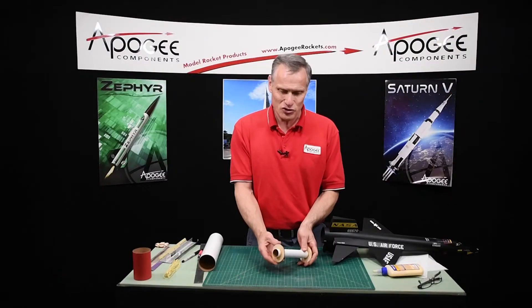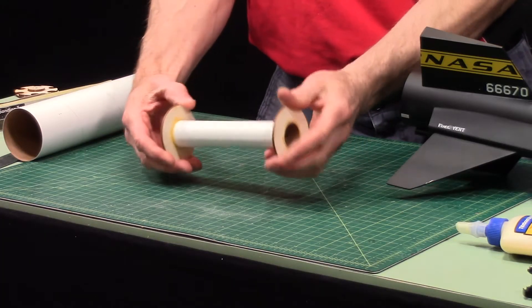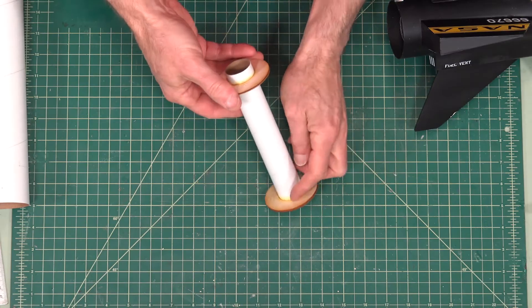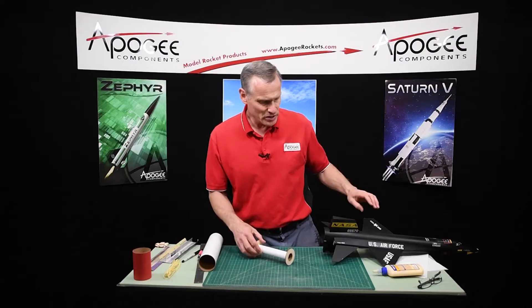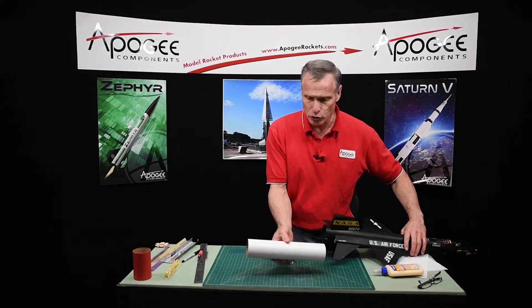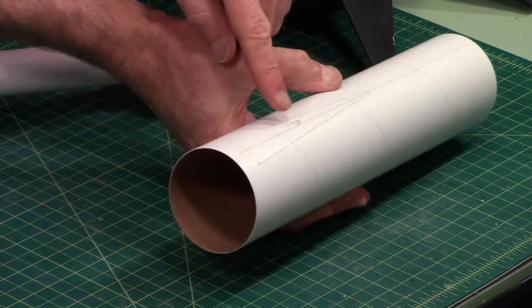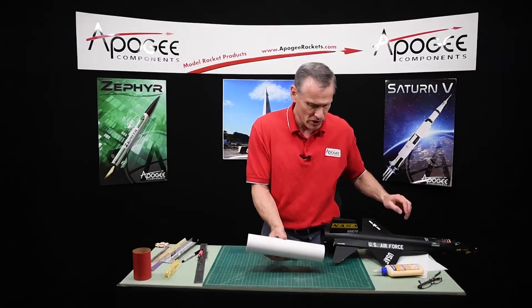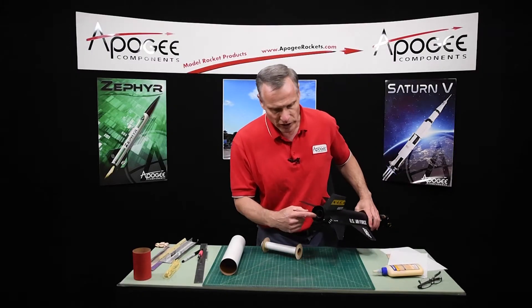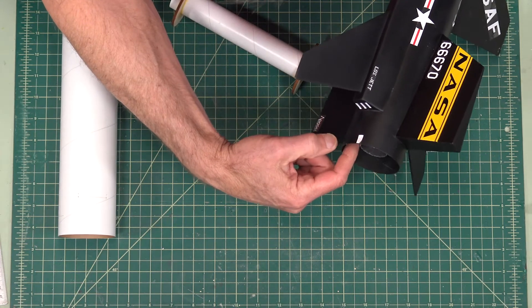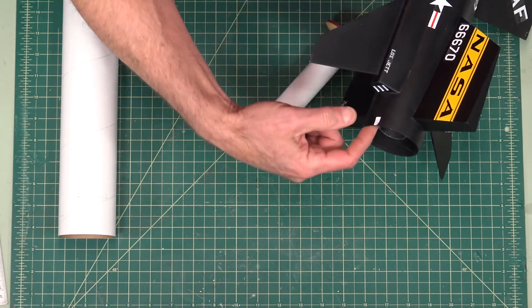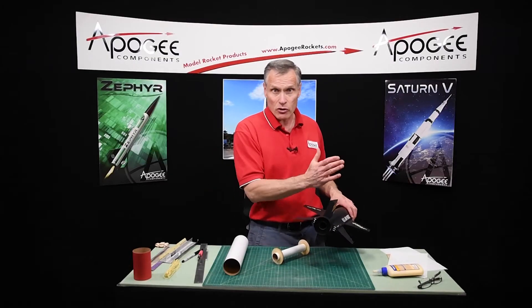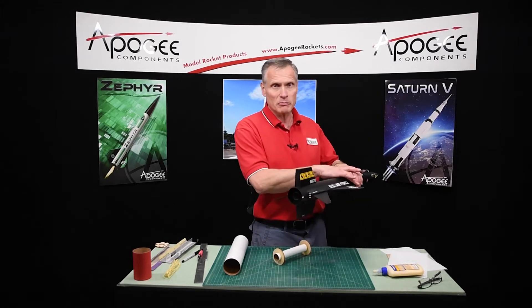The glue is now dry on the engine mount tube. I put fillets on so there's nice glue all the way around. Now this is going to be glued into the aft tube, and you can tell the aft tube because it has a lot of etching on it. It's the longer of the two big tubes. When it gets glued in, it's going to be about one inch inside the tube. And the reason for this is I want to move the center of gravity as far forward as possible.